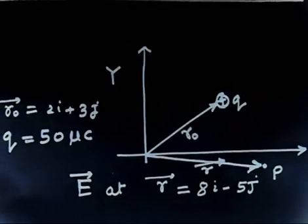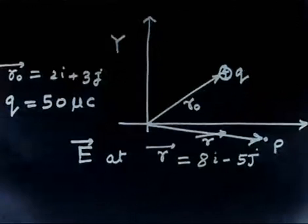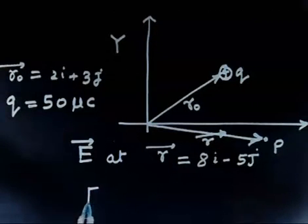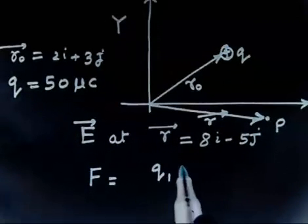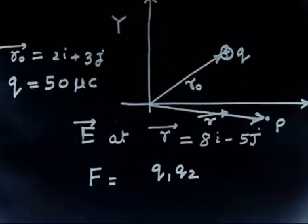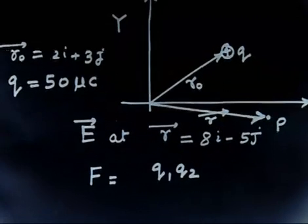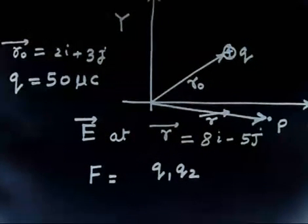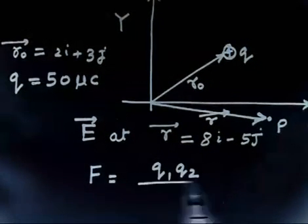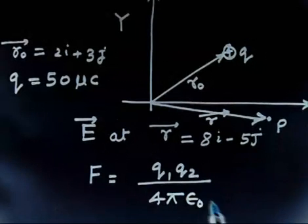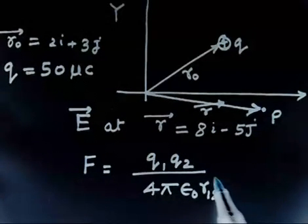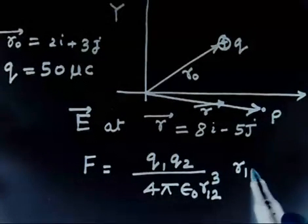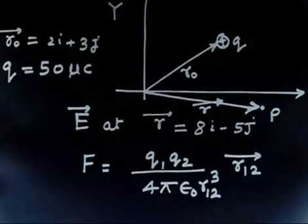So we can use the vector form of Coulomb's law. So we have already written the force q1, q2 by 4πε0r². And if I have r12, so I can write r12 cubed and then r12 vector. This we have written in the class.